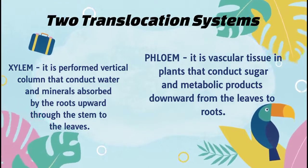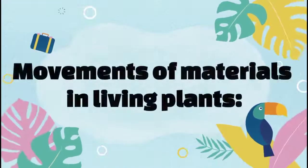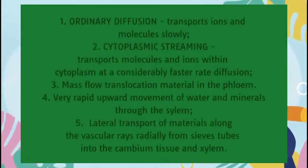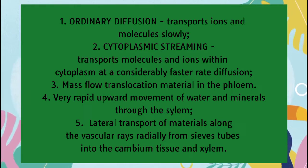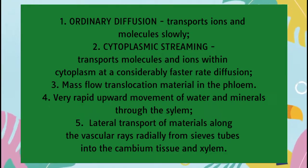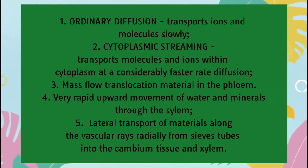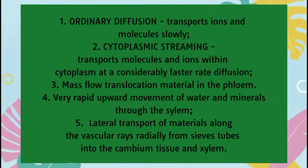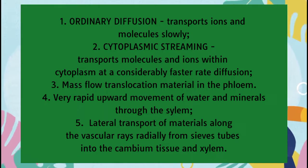Meaning, xylem transports water and phloem transports food. There are movements of materials in living plants that have been observed to occur in different ways, namely: First, ordinary diffusion, which transports ions and molecules slowly. Second, cytoplasmic streaming, which transports molecules and ions within the cytoplasm at a considerably faster rate than diffusion. Third, mass flow translocation of material in the phloem. Fourth, very rapid upward movement of water and mineral nutrients through the xylem. Fifth, lateral transport of materials along the vascular rays, gradually from sieve tubes into the cambium tissue and xylem.